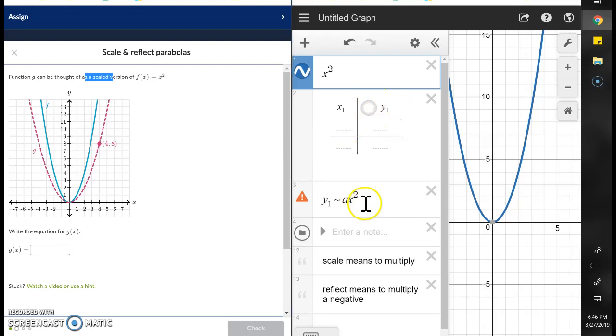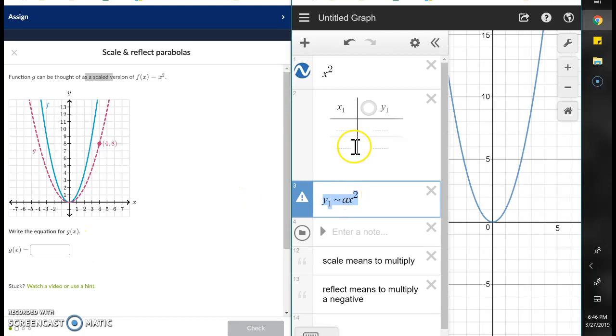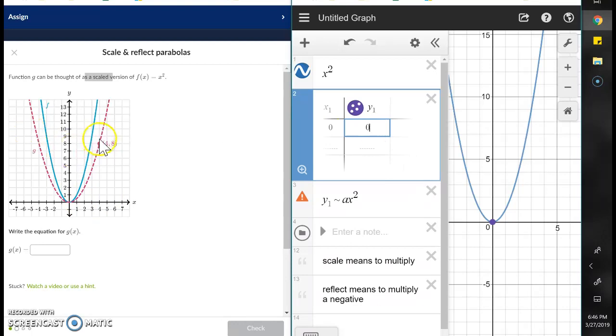We're going to use the table and regression to figure out what a is, what the scaler is. I'll turn on the table, I've got the regression right there. I'll go ahead and leave the parent function in. I'll type in the first coordinate point, so the parabola's vertex is (0,0), and the coordinate point it gives us is (4,8).